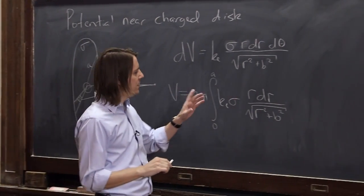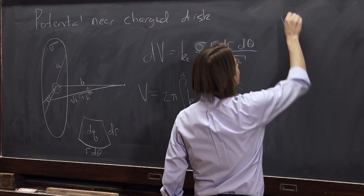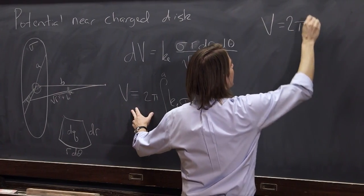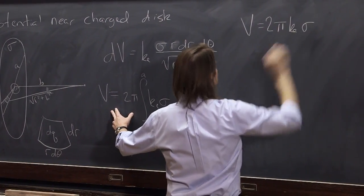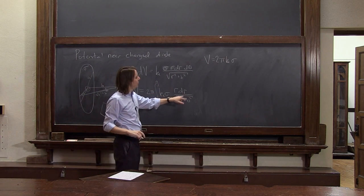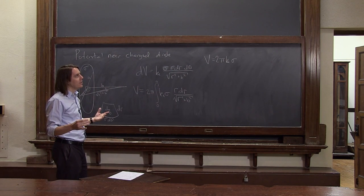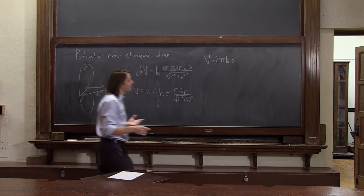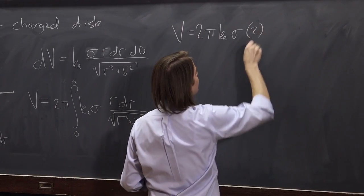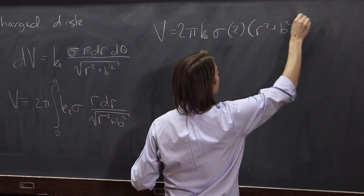So now let's do the r integral. This one we can do by hand. V is, let's keep our constants out here, 2 pi ke sigma. And it's really the integral of r times r squared plus b squared to the minus 1 half. So you raise it to the plus 1 half. And you divide by that 1 half, which means you multiply by 2, r squared plus b squared to the 1 half.